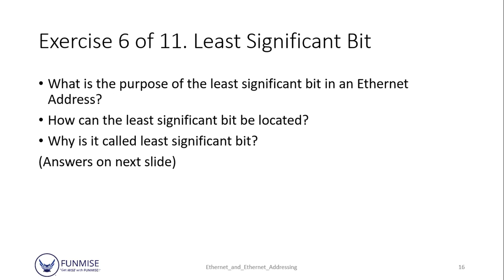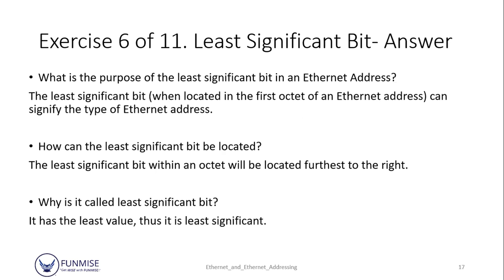Exercise 6 of 11: we're going to review the least significant bit. What is its purpose, how can it be located, and why is it called the least significant bit? When dealing with an Ethernet address, the least significant bit of the first octet tells you what type of Ethernet address it is. You can locate it because within that octet, the least significant bit will be the one furthest to the right. It is called the least significant bit because it has the least value.